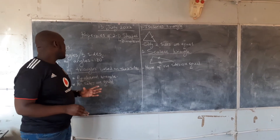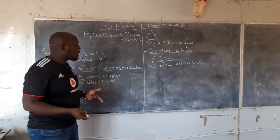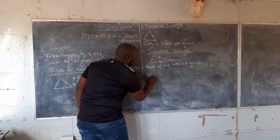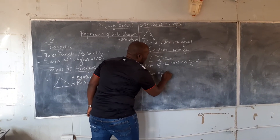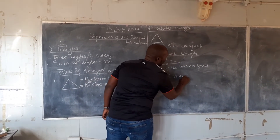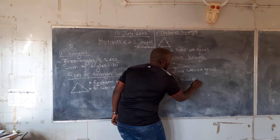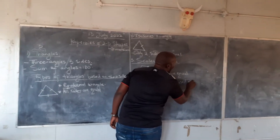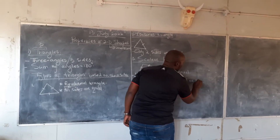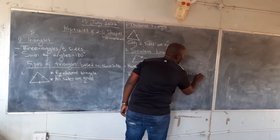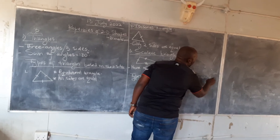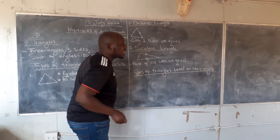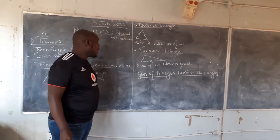Now we have classified triangles based on their sides. Let us look at triangles based on their angles. We can also classify them based on their angles.